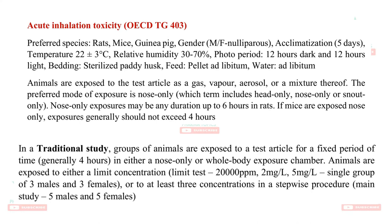Acute inhalation toxicity involves administration of gaseous or vaporous material using special equipment where only the animal's nose is exposed. It is administered for 6 hours in rats; if mice are used, it should not exceed 4 hours. There are two types: a traditional study where it is administered for nearly 4 hours, either nose-only or whole-body exposure chamber, testing three dose levels.